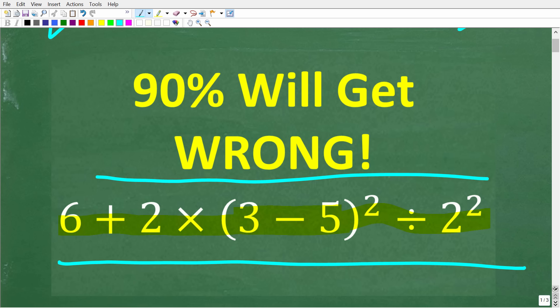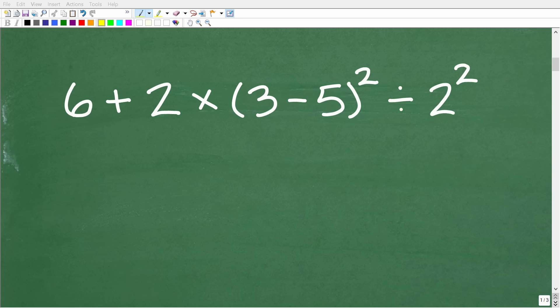So one more time, we have a simple arithmetic problem. We're not doing any algebra or calculus. So we have 6 plus 2 times 3 minus 5 in parentheses squared divided by 2 squared. So once again, no calculators, but let's take a look at the complete solution steps right now.